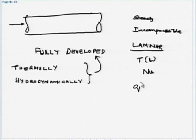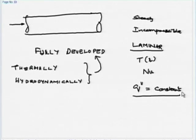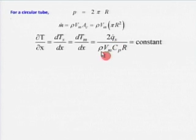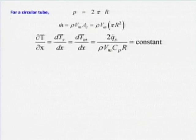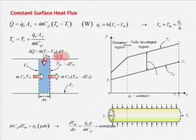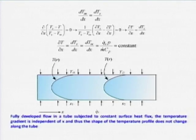I am solving for the constant heat flux boundary condition, not constant wall temperature. Professor Arun has already shown that for constant heat flux, dT/dx = 2Q_dot_s / (ρC_P V_m R), where V_m is the average velocity and Q_dot_s is the constant heat flux, derived from simple energy balances. That means I know dT/dx in terms of constant heat flux and mass flow rate.